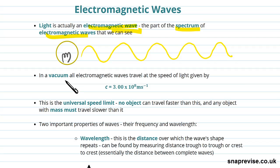So in a vacuum, all electromagnetic waves travel at the speed of light, which is given by c = 3 times 10 to the 8 meters per second, 3.00 - obviously that's to three significant figures.